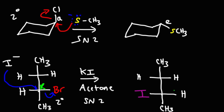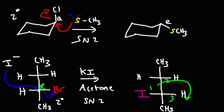For the other chiral center: this is group one, group two, group three — this gives us R. H is in the front, so when we reverse it we get S. We can see that the configuration at the chiral center was inverted. So that's it for this video.